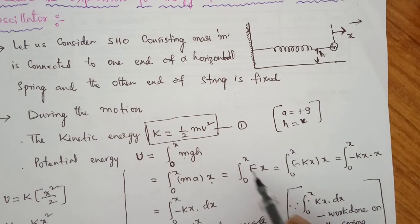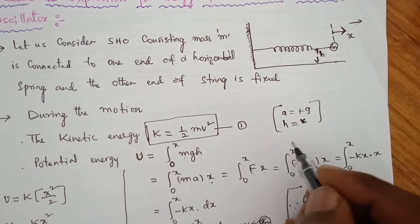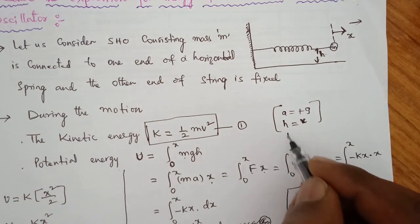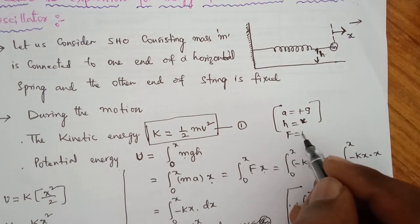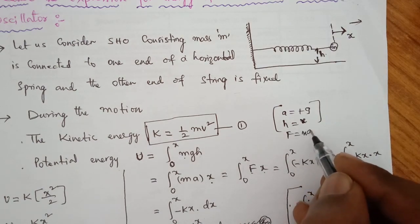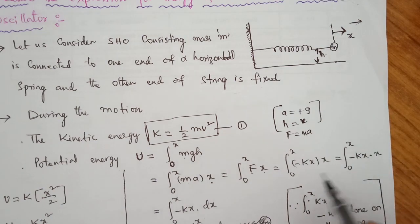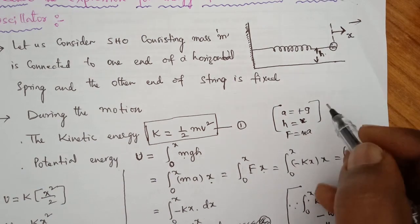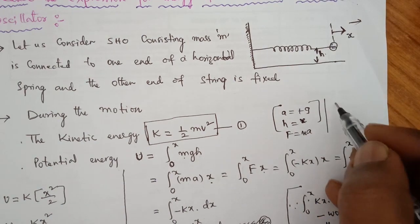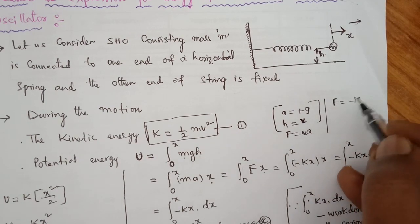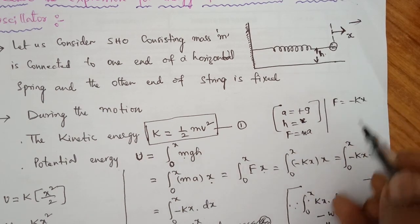Integration from zero to x of F dx, where F equals minus k into x. This represents the work done on the spring. When force is applied on the spring, there is a displacement and there is work done on the spring.